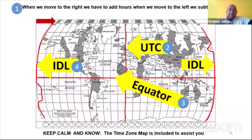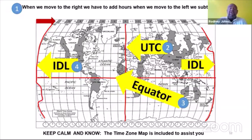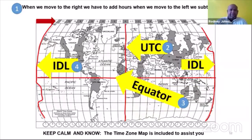Look at the time zone map right now. I know a lot of candidates, as soon as they see this map, they stop, but I'm here to tell you: keep calm. The time zone map is included to actually assist you. Everything you need to complete your time zone calculations is included on this map. At the top of the map you'll see what I call the time zone ruler — this is the exact map used in all tourism question papers, so you can expect to see the same map on Monday.